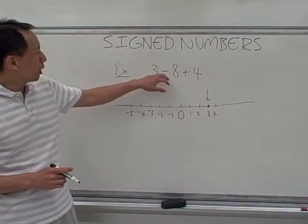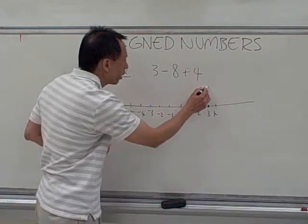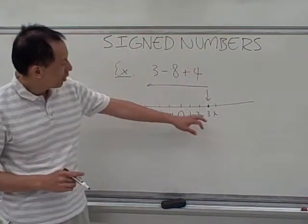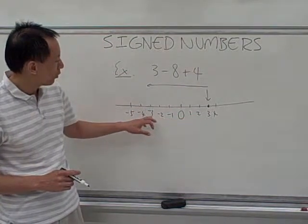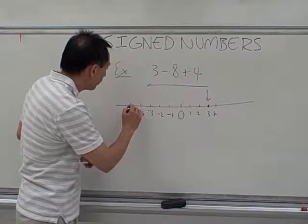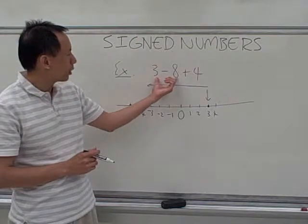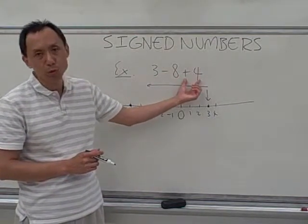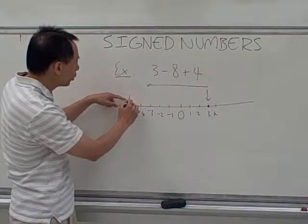Because the first operation is a minus, we have to move to the left. So we move to the left by 8 units. Let's count. Starting here, 1, 2, 3, 4, 5, 6, 7, 8 units. We are right here. This negative 5 represents the result of the first operation. But we still have a second operation of a plus 4. So this negative 5 now will be our new starting point.